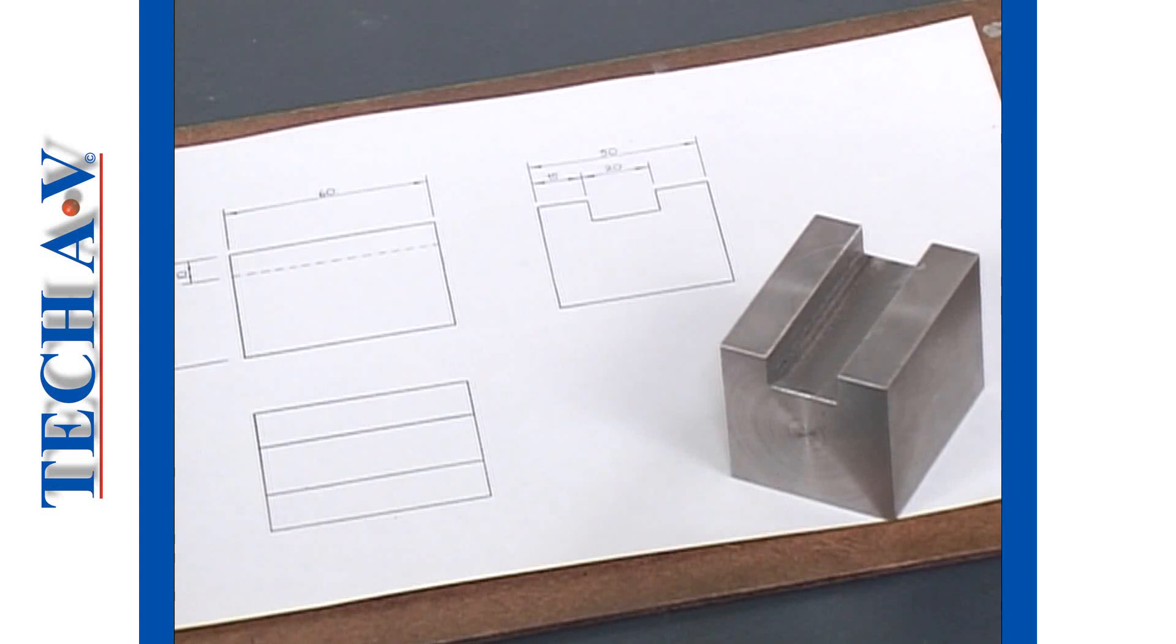Firstly, we must be able to see the shape of the object drawn, so that we'll know what it should look like when it has been made.